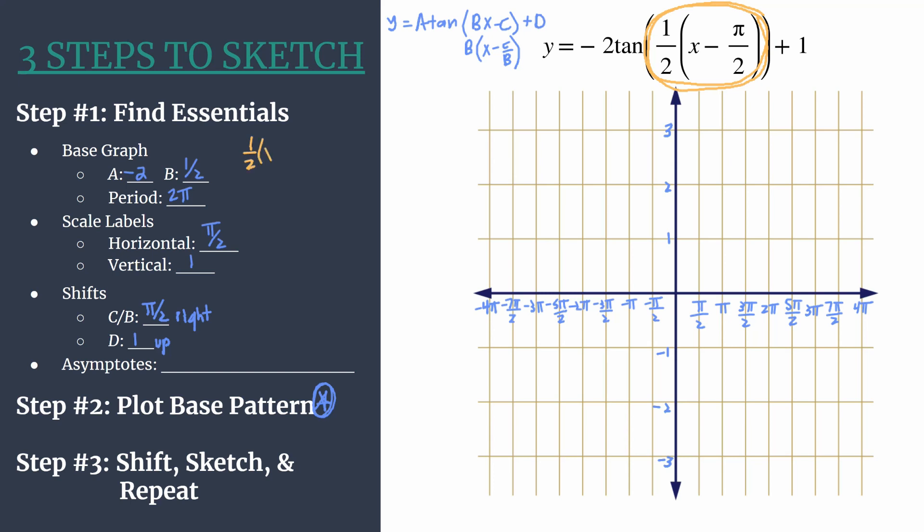So here we go, we'll do a little scratch work. We have 1 half x minus pi over 2, the inputs of the tangent function for our equation, and set them equal to pi over 2 plus pi k. Now k is just that integer, and you can substitute in negative 1, 0, 1, whatever you need, and it'll get you a different asymptote along the graph. So now that we have this, we simply want to solve for x. So the first thing we should do is multiply both sides by 2. So that gets rid of the 1 half on the left side. So we're left with x minus pi over 2, equal to pi over 2 times 2 is just pi, and pi k times 2 is 2 pi k.